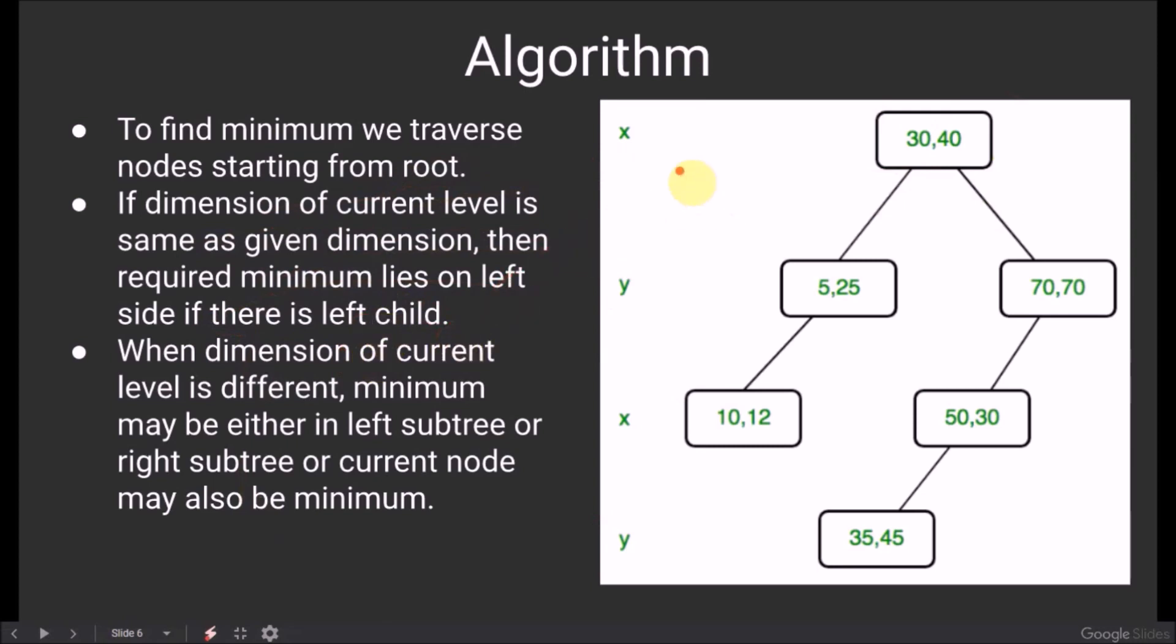Suppose the dimension we need to search is x, and we are starting at the root node. So the current dimension is x, and the required dimension is also x. While constructing a k-d tree, the smaller elements are inserted to the left side of the tree. Therefore, as both the dimensions are same, now we will look in the left node of the tree.